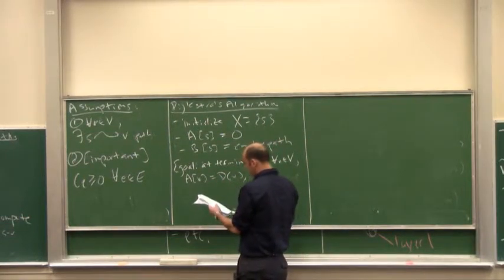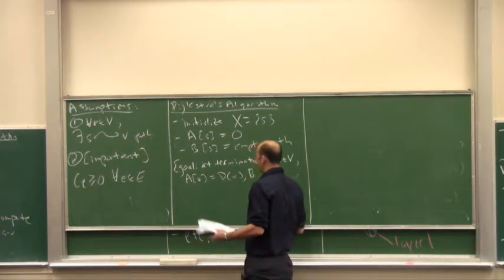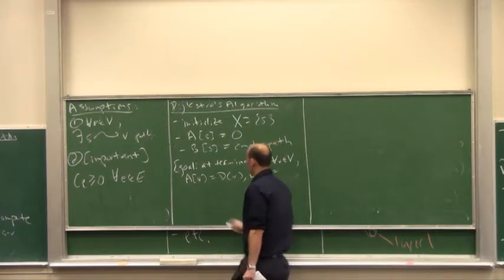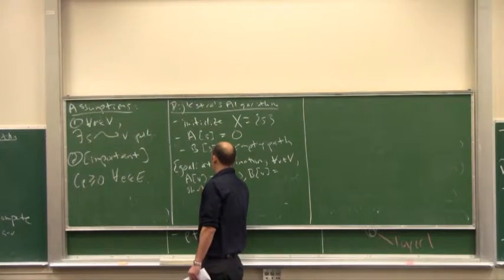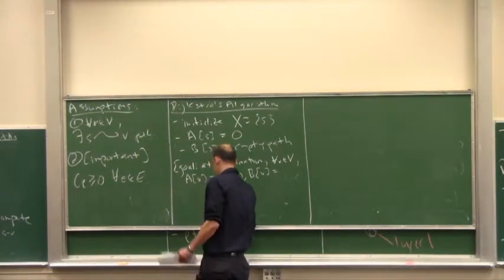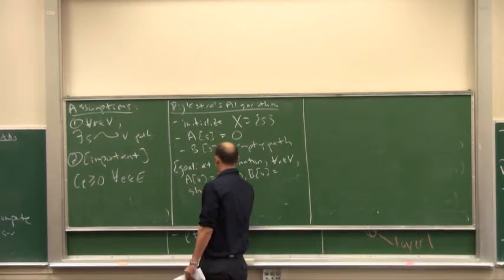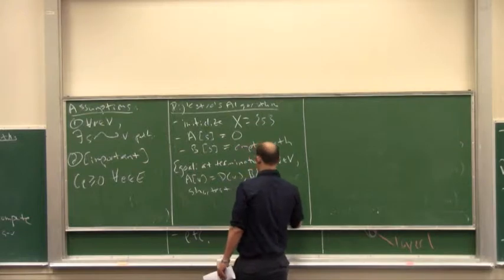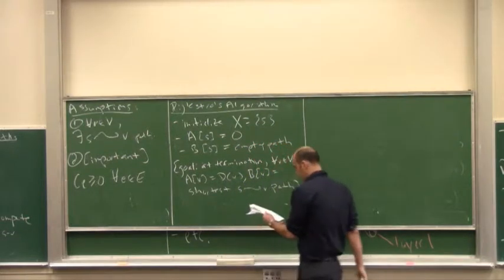And then we want our array B to have actual paths. So B of V is going to contain the shortest path from S to V.